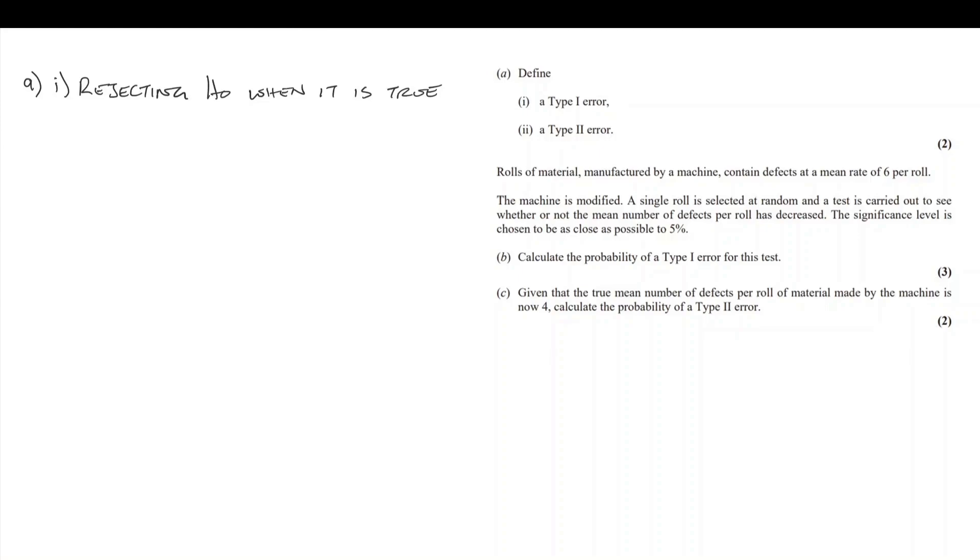The other type of error that we make is not rejecting when it was false. Not rejecting H0, but H0 was actually false. These are the two errors, the type 1 and the type 2.